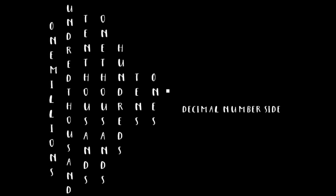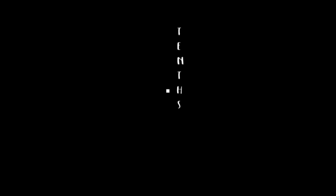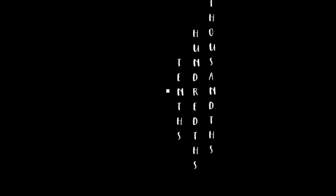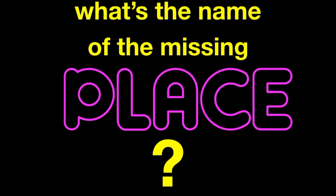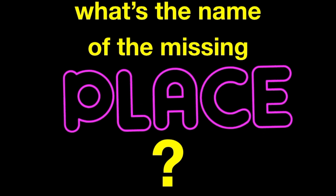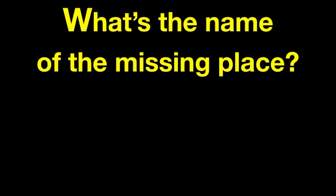On the decimal side, we have tenths, hundredths, thousandths, ten-thousandths — and we can go on and on. Now let's practice some more. Can you tell me the name of these missing places?